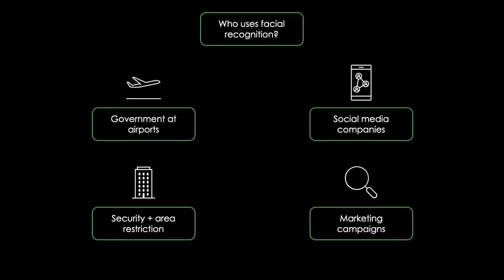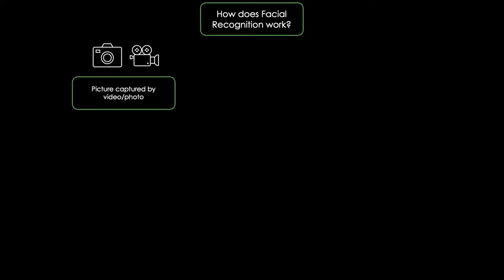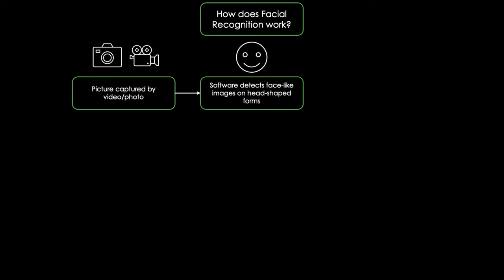Let's now focus on how facial recognition works in detail. First of all, a picture of your face is captured by either video or photo. You might appear alone in that picture or in a crowd of people, and you might also look straight into the camera or not. Upon detection of each face-like image on a head-shaped form, your head's position, orientation and size is estimated. In general, a face needs to be turned at least 35 degrees towards the camera to be detected. Afterwards, the image of the captured face is scaled, rotated and mapped to a specific size — a process called normalization.